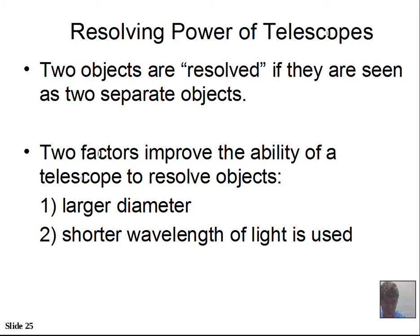The resolving power is our ability to see separate objects on the sky. Two objects are resolved if they are seen as two separate objects when you look through the eyepiece. Amateur astronomers often look at double stars — about half the stars in the sky are actually two stars. Some are really, really close, and if your telescope is high enough quality, you can resolve them. A larger diameter telescope has inherently better resolving capabilities.